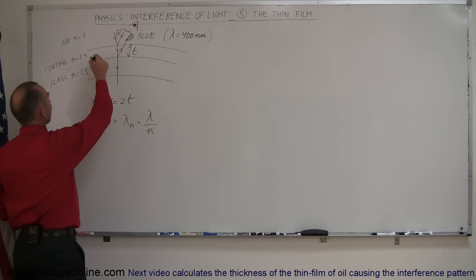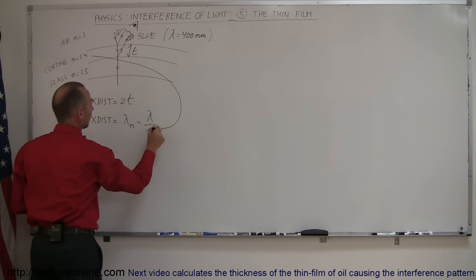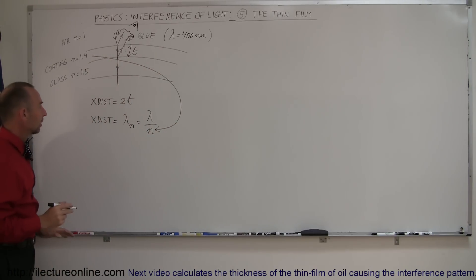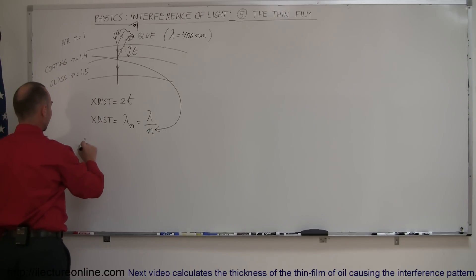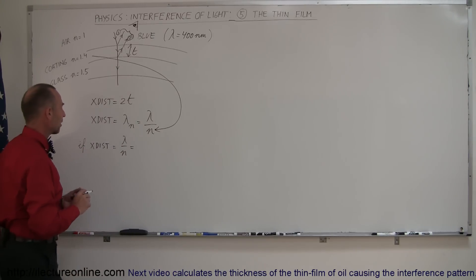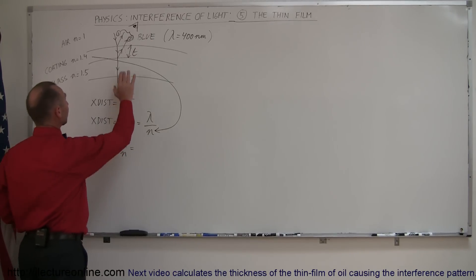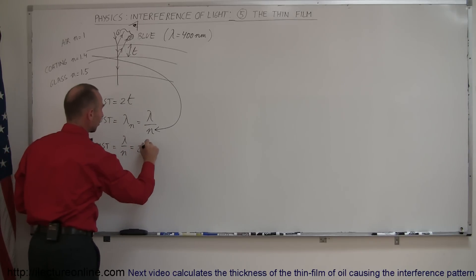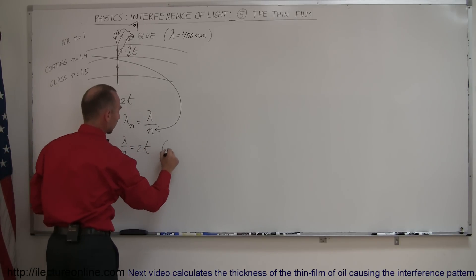And so we're going to use n equals 1.4 in here to adjust for the wavelength. And so we can now say that if the extra distance traveled, which is equal to lambda over n, if the extra distance traveled by the second ray, which is lambda over n, is equal to twice the thickness of the film, then we'll have constructive interference.